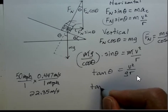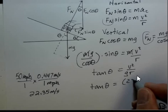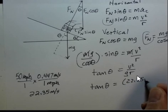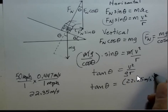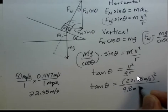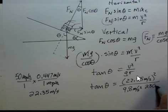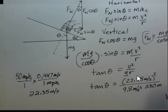So this tangent theta is equal to 22.35 meters per second, to square that, 9.8 meters per second squared for the acceleration due to gravity, 230 meters for the radius of the circle.